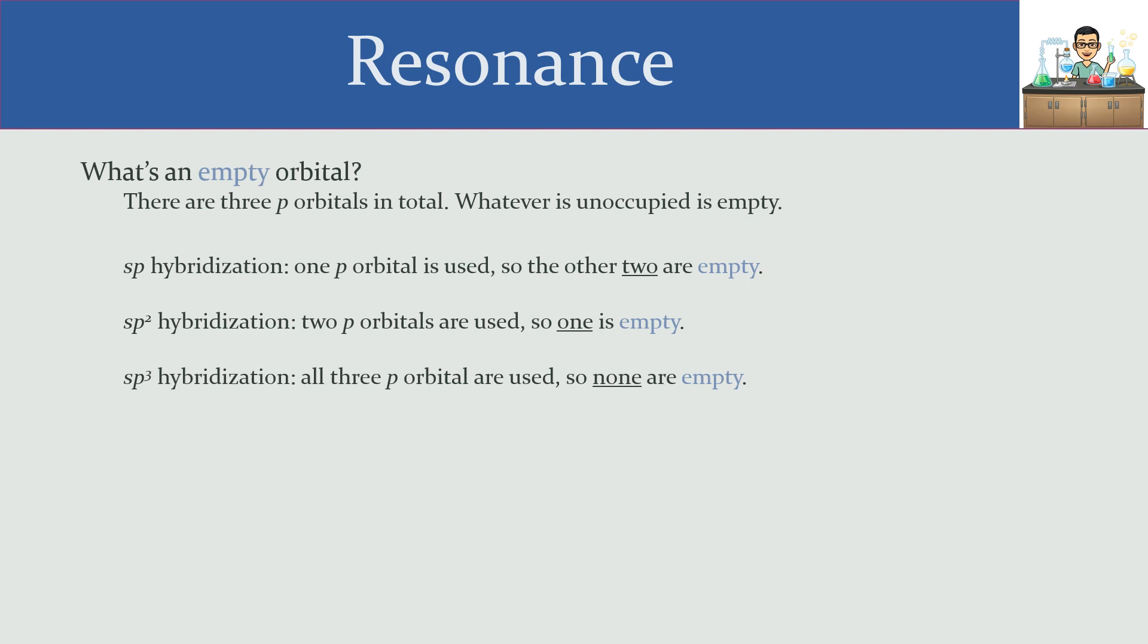But for sp3 hybridization, because it's sp3, it means we're using all three of the p orbitals. If we are using all three of the p orbitals, that means that none of them are empty, and that's a problem for resonance. Since resonance needs an empty orbital, there is no resonance possible with sp3 atoms.